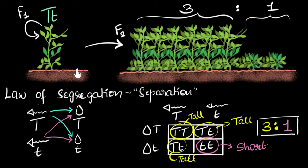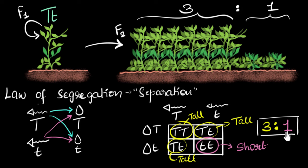Just to be clear, this does not mean that if you grow four plants, exactly three will be tall and one will be short. Chances don't work that way. It means that if you grow lots of plants — maybe hundreds — then you will see roughly a three-to-one ratio for tall and short plants.